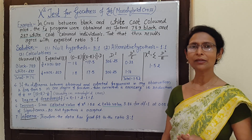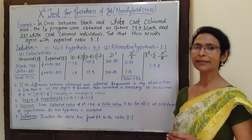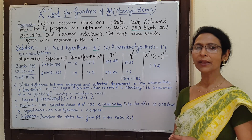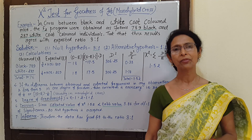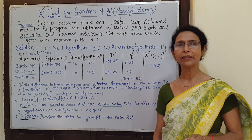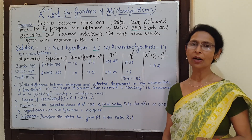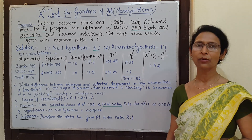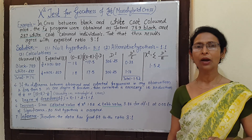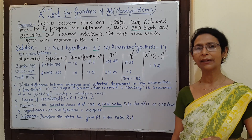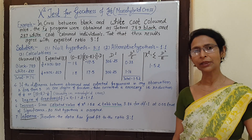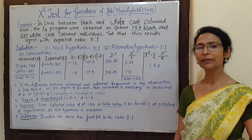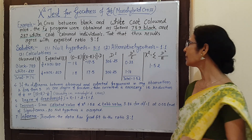Hello everyone, today I will discuss a problem of monohybrid ratio for goodness of fit. I have already given an overview of the Chi-Square test in my previous video. Now in this example,